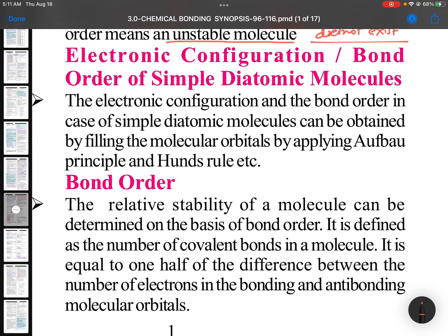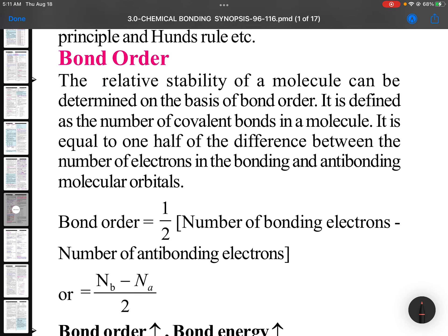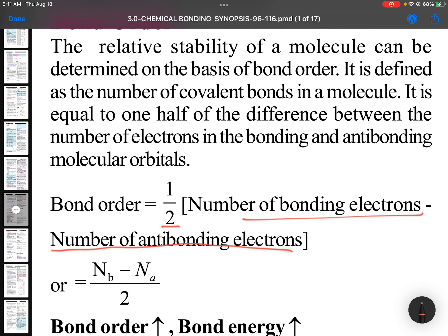The electronic configuration and bond order of simple diatomic molecules can be obtained by filling molecular orbitals using the Aufbau principle and Hund's rule. Bond order equals one half of the number of bonding electrons minus the number of anti-bonding electrons. The relative stability of a molecule can be determined on the basis of bond order — if bond order is more, bond energy is more, stability is more, and bond length is less.